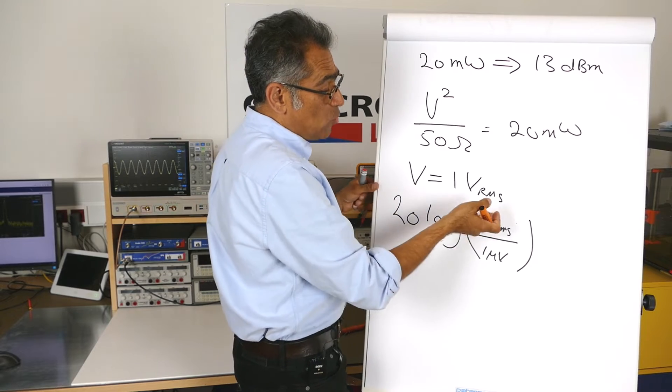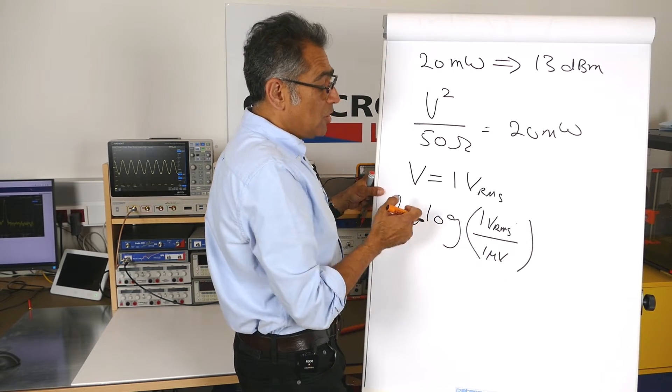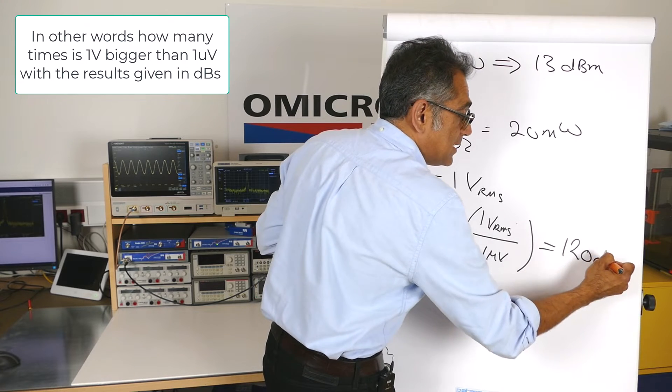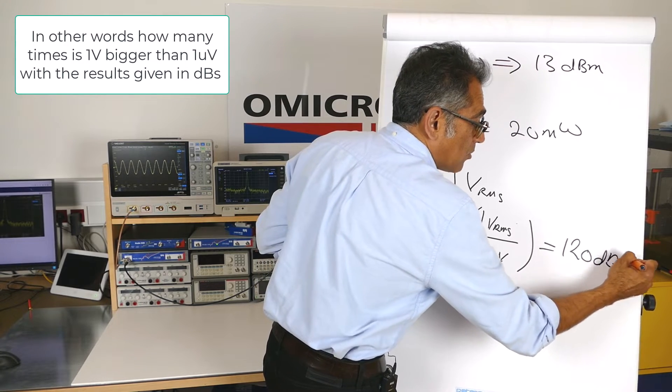The standard is talking about dB microvolts, so we're comparing it to 1 microvolt. And of course, if you do this, 1 divided by 1 microvolt, 20 log will give you 120 dB microvolts.